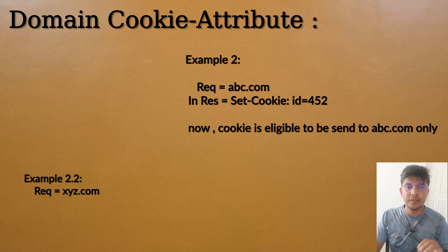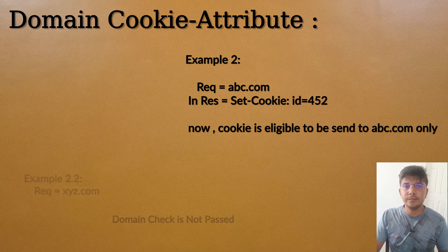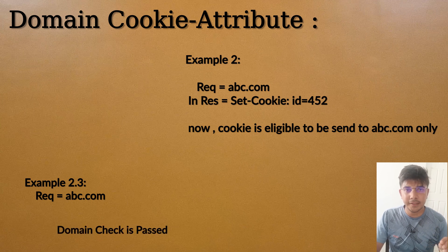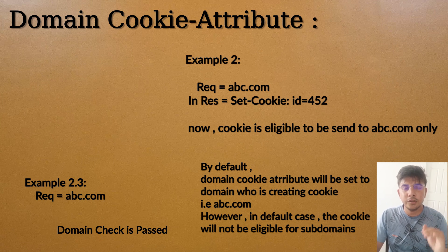If the request is towards xyz.com, since the domains are entirely different, the cookie will not be eligible to be sent. If the request is to abc.com itself, the domain check passes because the default domain cookie attribute is set to the main domain. Since both are the same, the cookie passes the first filter.